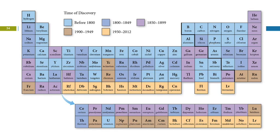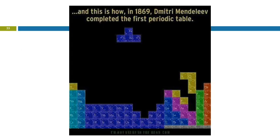So this is just sort of interesting. This shows in just blocks of time when these elements were discovered. And this is a little bit out of date because we now have elements in here as well. All of these yellow ones are radioactive. They're actually man-made elements. It's kind of interesting. And this is how, in 1869, Dmitry Mendeleev completed the first periodic table.